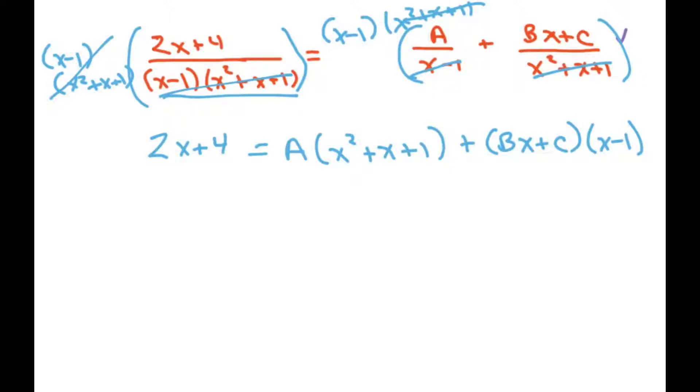So our goal is to find a and b and c. And I think the first thing we'll do is we'll go ahead and let x equal 1. If we do, plug a 1 in here, that equals 0. So that's going to knock out that right there. Because this would be 0 times that is going to be 0. So I'm just going to deal with this part and plug in 1. And we get 2 plus 4. And you're going to get a times 1 squared plus 1 plus 1. So that's going to be 3a equals 6. Therefore, a equals 2.